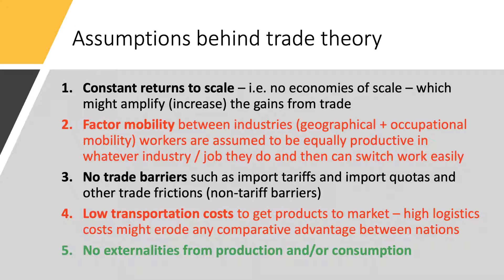The first assumption is what's known as constant returns to scale. In this model — most students use a two-country, two-product model — we assume constant returns to scale. If we double the input in wheat, for example, we get double the output in wheat, and you move up and down a linear, straight-line production possibility frontier. Constant returns to scale.